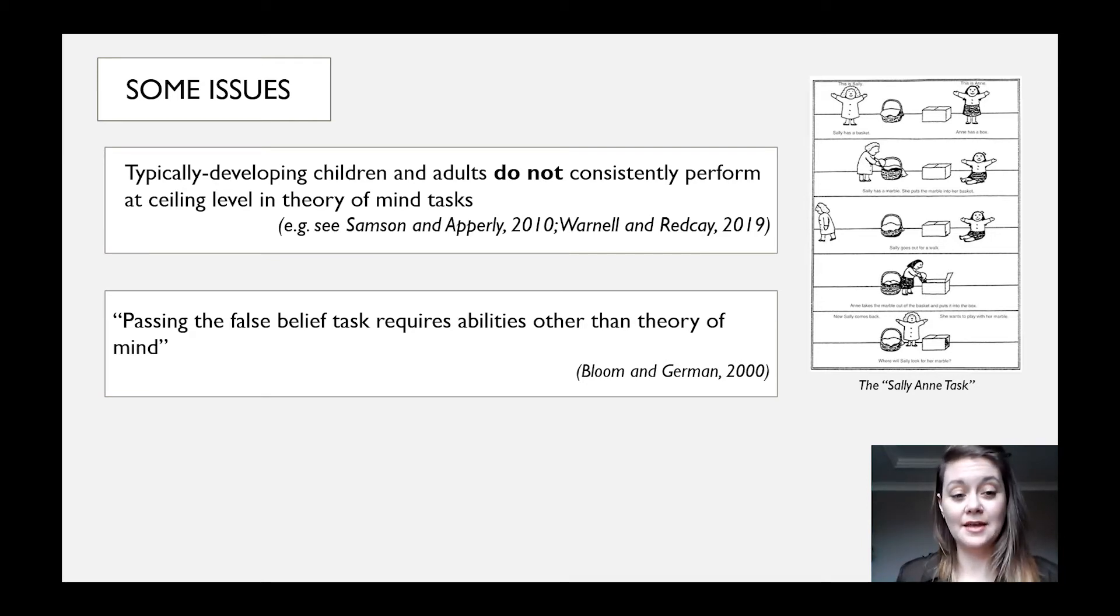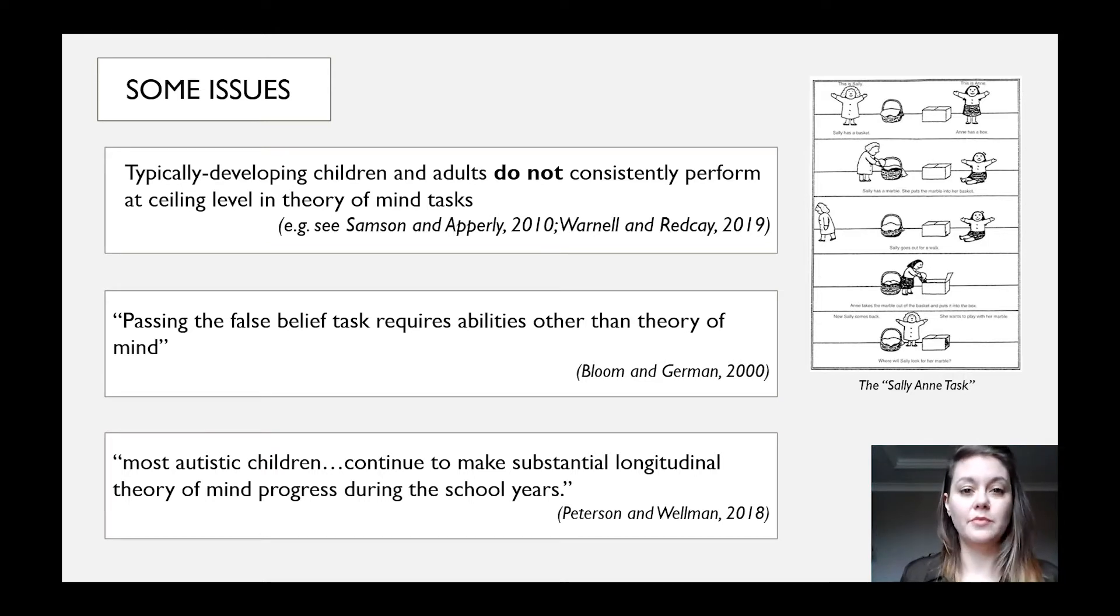And finally, this theory has been based almost exclusively on studies involving preschool aged children. A recent longitudinal study tested children between three and eleven and found that most autistic children, like their typically developing and deaf peers, do continue to make substantial theory of mind progress during the school years. They don't reach the same level at the same age, but they show steady individual progress.